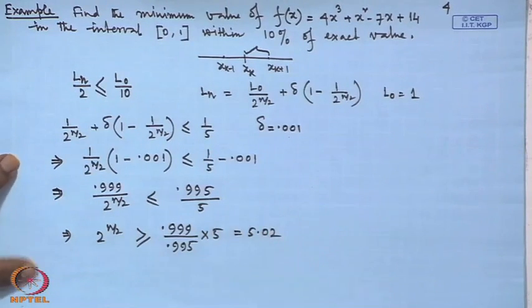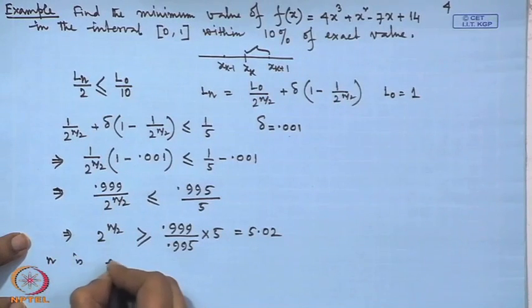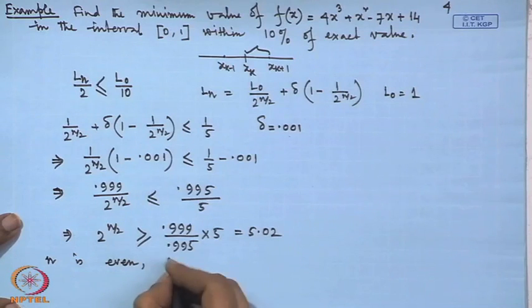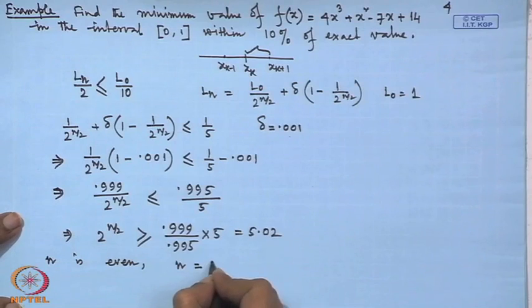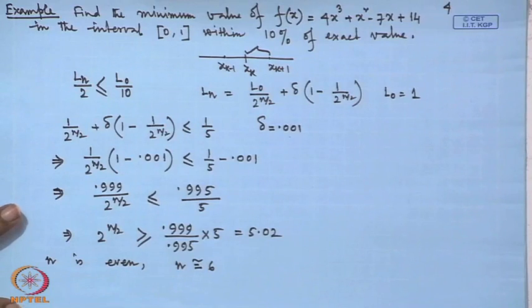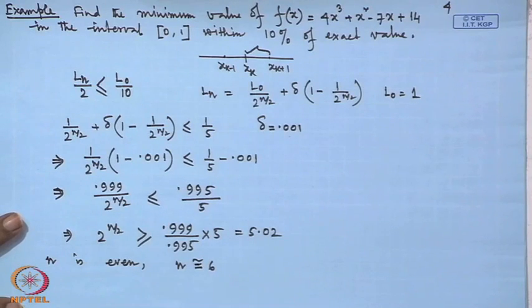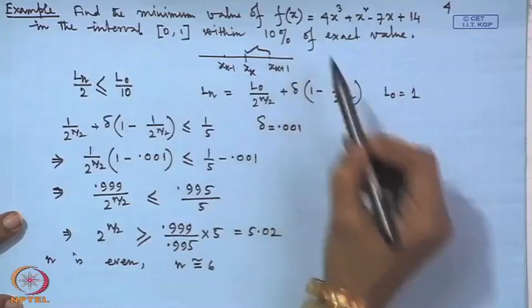Since in the dichotomous technique n is always even (two experiments per iteration), the minimum even value satisfying the condition is n = 6. We will therefore perform 6 experiments for this problem, which guarantees 10 percent accuracy of the exact value.